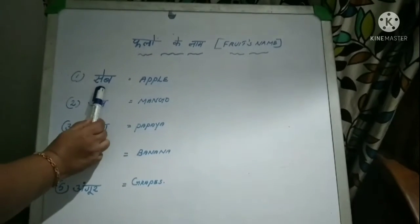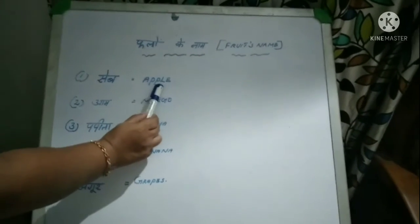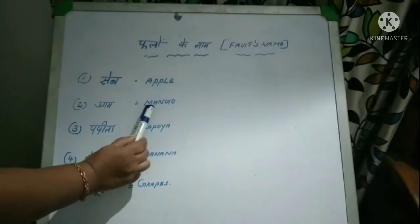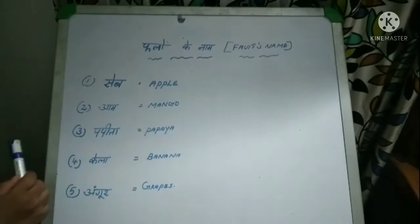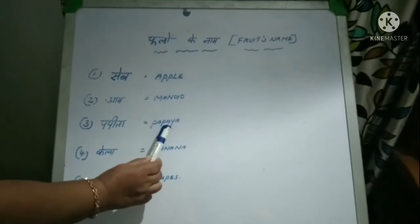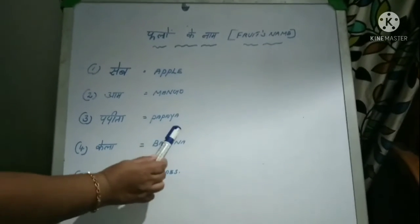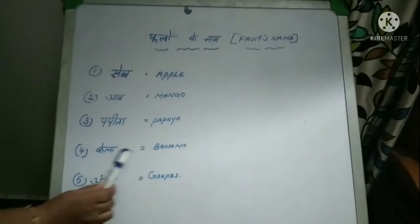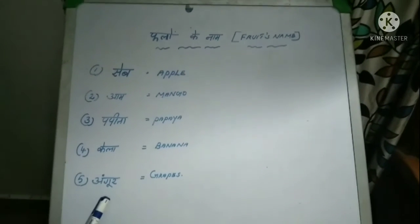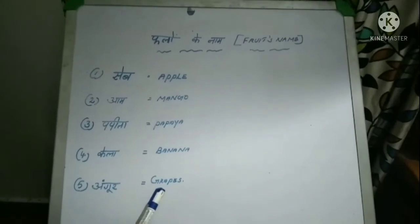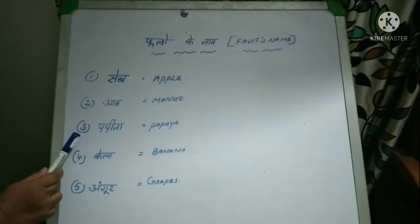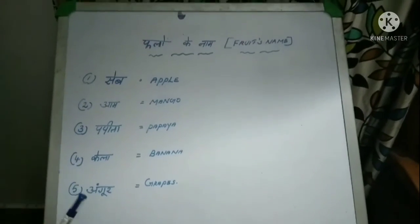Listen students: Seb - A-P-P-L-E. Aam - M-A-N-G-O. Kela - Banana. Angur - Grapes: G-R-A-P-E-S.